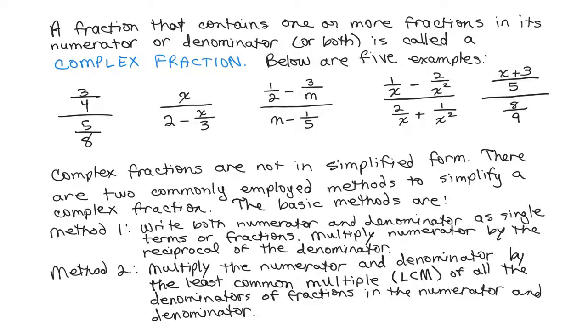Complex fractions are not in simplified form. That means we can simplify further and there are two commonly employed methods. The first method is to write both the numerator and denominator as single terms or fractions and then multiply the numerator by the reciprocal of the denominator.